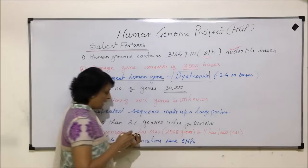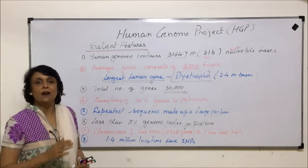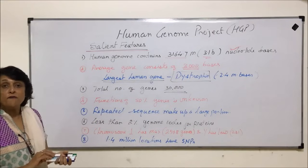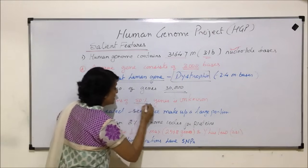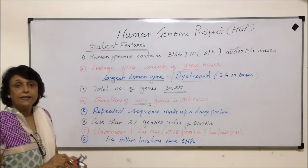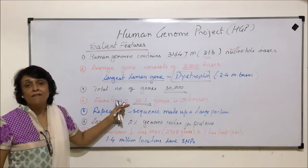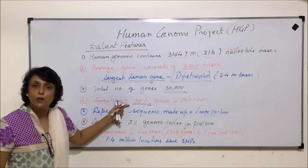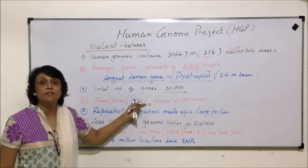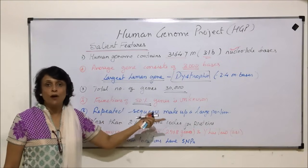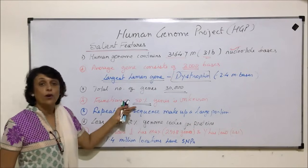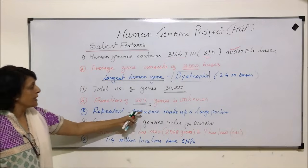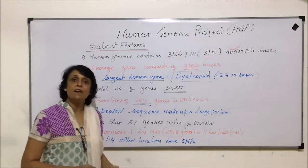The total number of genes found by this project was only 30,000 — the estimated number was much higher, more than double. The function of 50 percent of genes is still unknown. This could be the reason why some originally thought only the coding part should be sequenced — perhaps this 50 percent is the non-coding portion and we don't know what they code for.